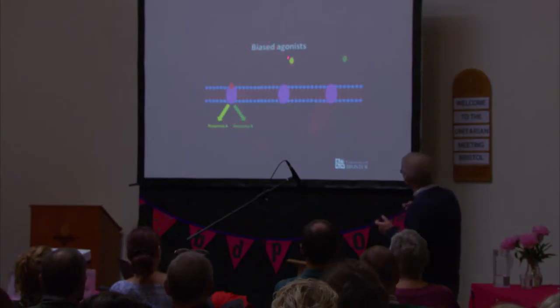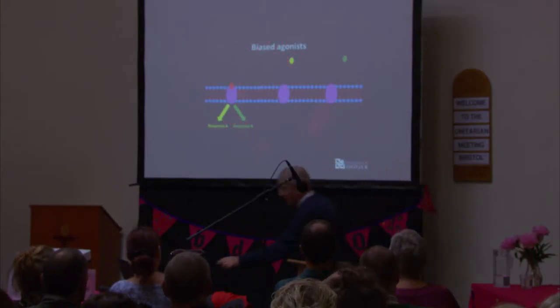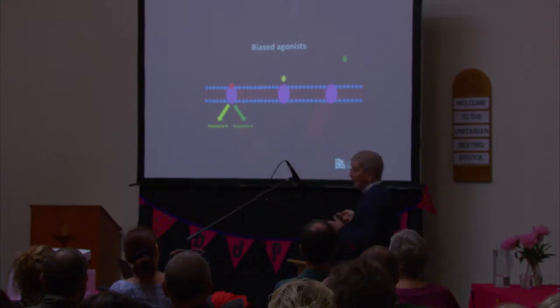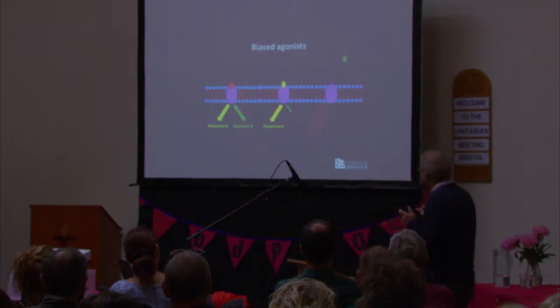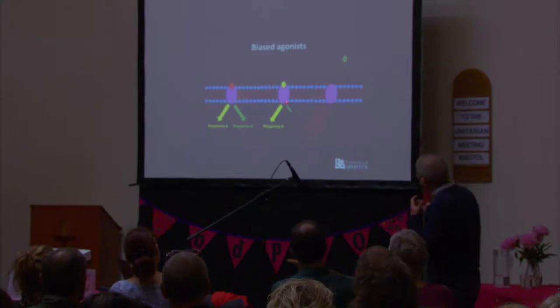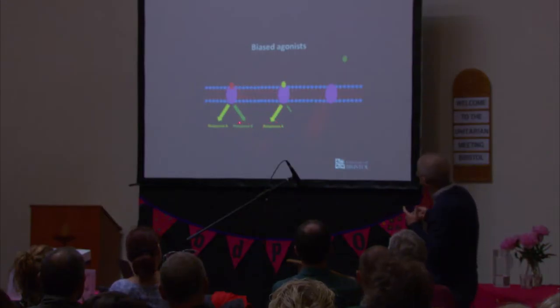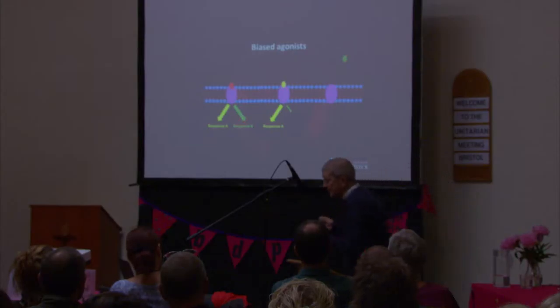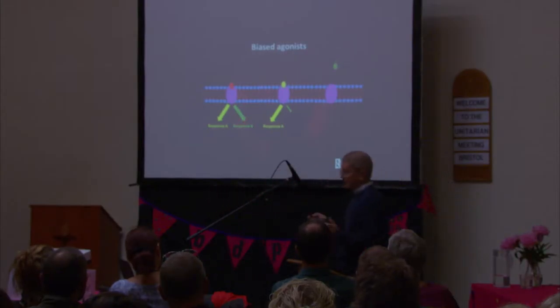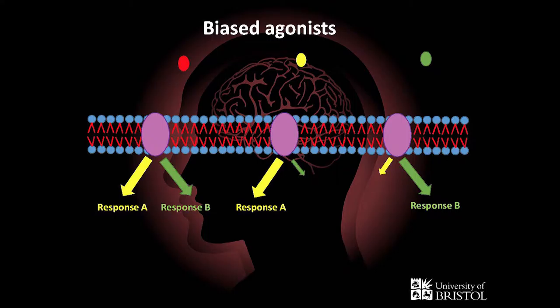The idea of a bias agonist is that you might have another drug that, when it binds to the receptor, only puts the protein into the state that produces response A — not response B. And a third drug could come along and produce response B rather than response A. So now you're ahead of most pharmacologists in understanding about medicine.